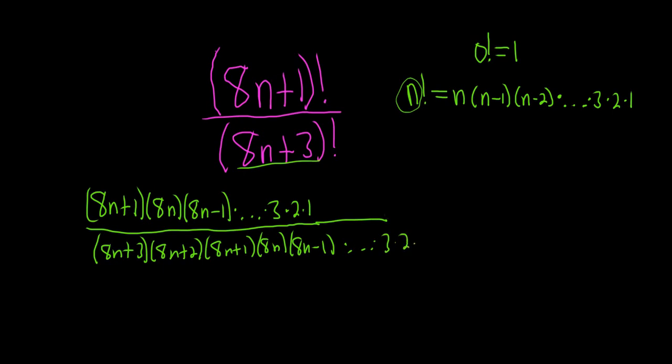3, 2, 1. So basically you just start by writing this down and then you just keep subtracting 1. So when you subtract 1 from this, you just get 8n. And then you subtract 1, you get this. Same thing here. You write this piece down, 8n plus 3. You subtract 1, you get 2. Subtract 1, you get 1, etc.